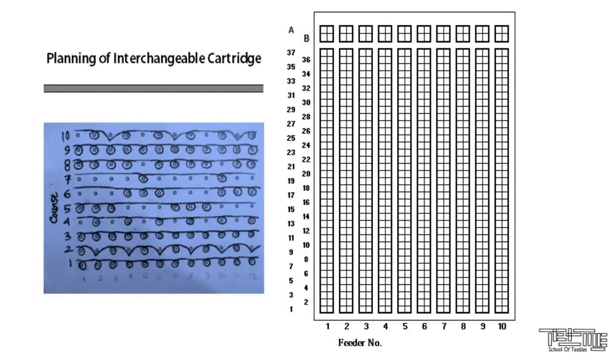Let's start the planning of interchangeable cartridge. Let's start with the first course. In the first course, all are knit loops. So for the first loop, first slots are empty. For second knit loop, the second slots are also empty. Same for third and fourth and so on.